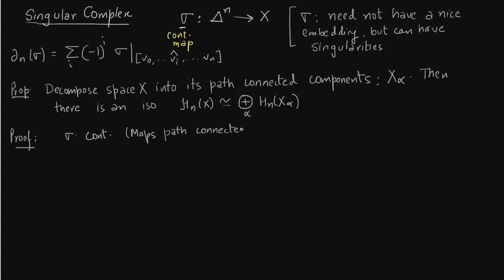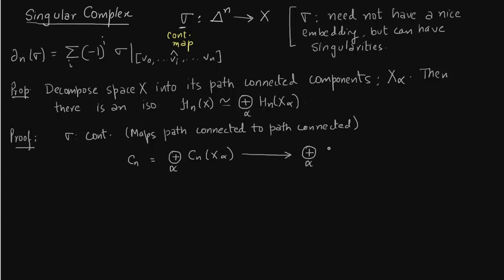The important implication is that continuous maps take path-connected components to path-connected components. That is, going from C_{n+1} to C_n, you take something path-connected to something path-connected — that is precisely the property of a continuous map. So C_n decomposes as path-connected components, just as in simplicial homology. The boundary map has two important properties: first, it should preserve direct sums; and second, the kernel and image of this map split as direct sums. This follows from sigma being continuous.